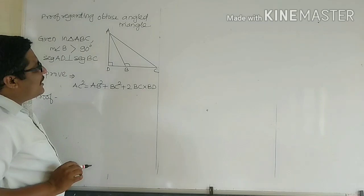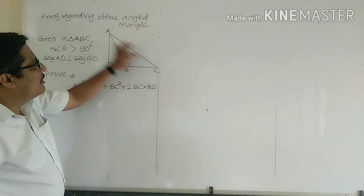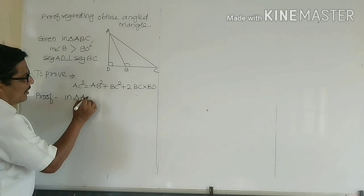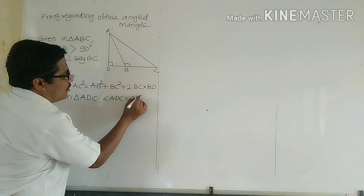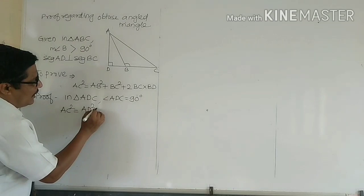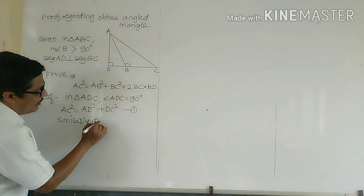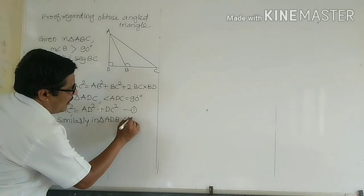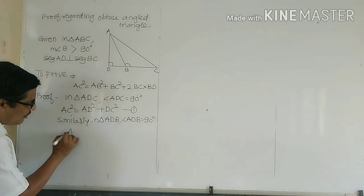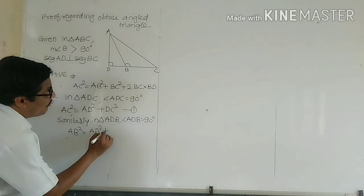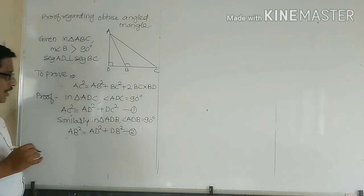Here there are two right angle triangles: triangle ADB and triangle ADC. First, in triangle ADC, angle ADC is equal to 90 degrees. So AC² = AD² + DC². Step number 1. Similarly, in triangle ADB, angle ADB is equal to 90 degrees. Therefore AB² = AD² + DB². Step number 2.